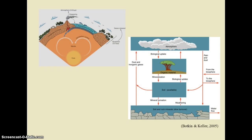The atmosphere, hydrosphere, lithosphere, and biosphere are depicted on the left. As a general rule, the mean residence time of the atmosphere is short, the hydrosphere is intermediate, the lithosphere is long, and the biosphere is intermediate. The diagram to the right shows a general movement of materials through each of these spheres.